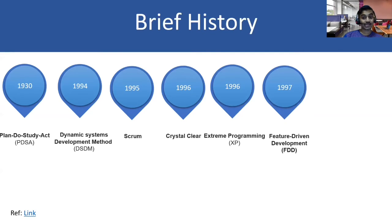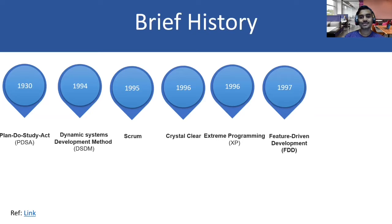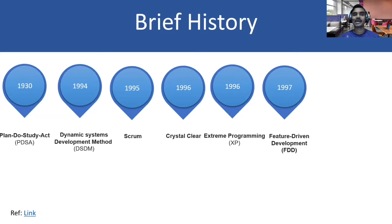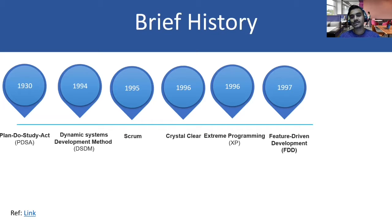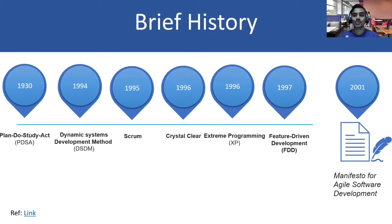Further down, Feature-Driven Development — found not far from here. Jeff DeLuca was tasked to launch a project for 15 months with 50 engineers for a large bank in Singapore, and he came up with the FDD methodology. All these different methodologies were always putting the customer in center, aiming for less documentation, faster go-live, and whatever the Agile Manifesto brought out.